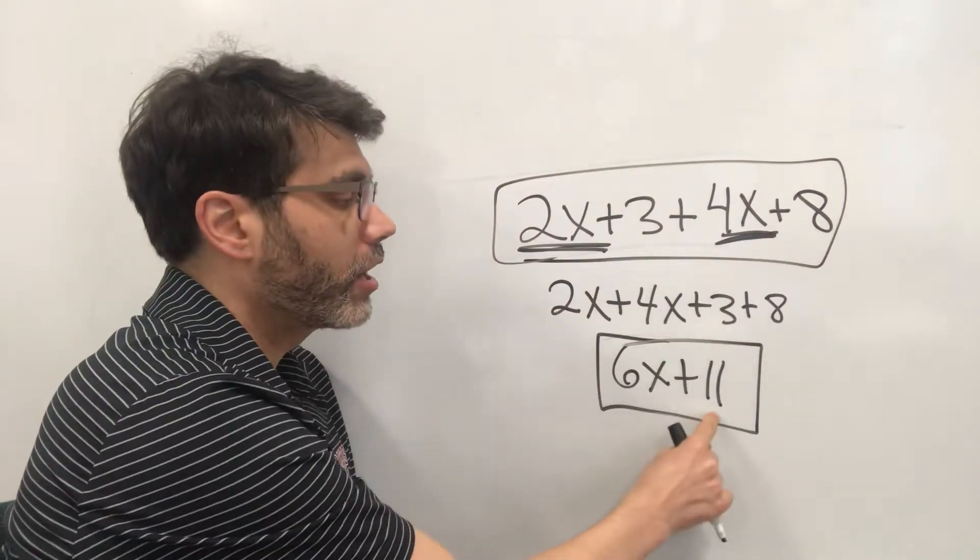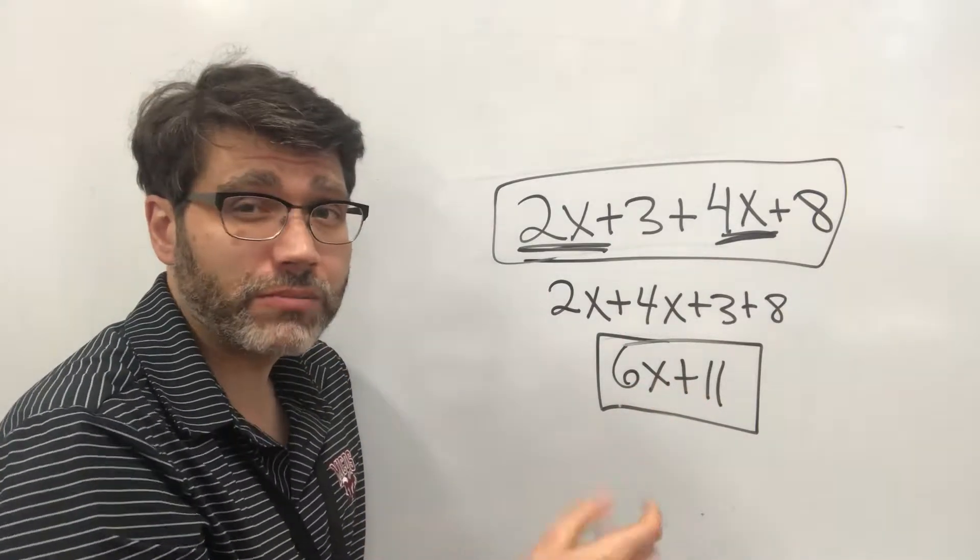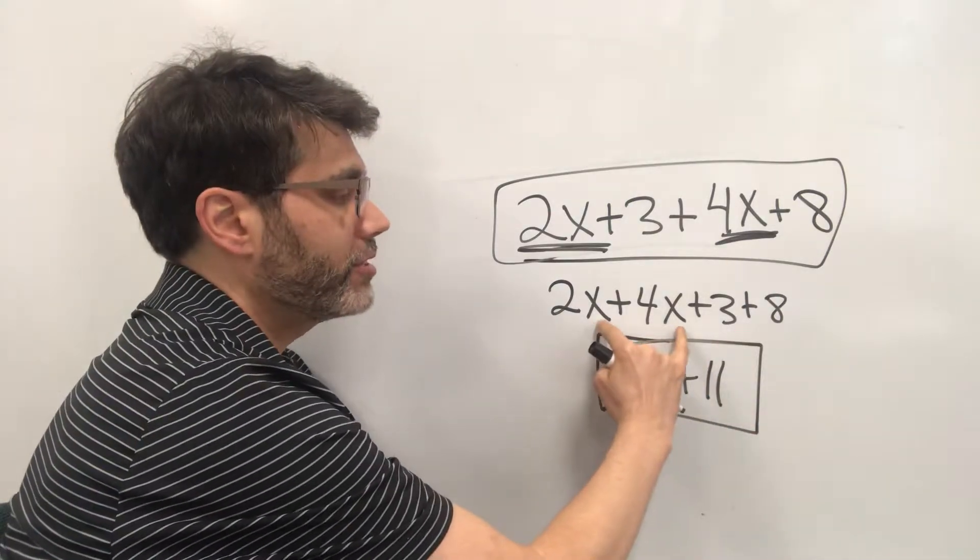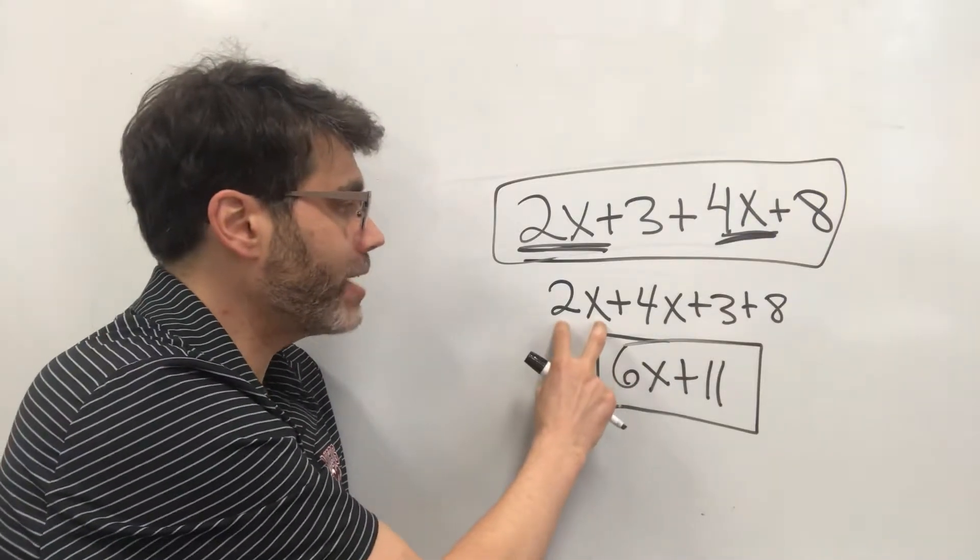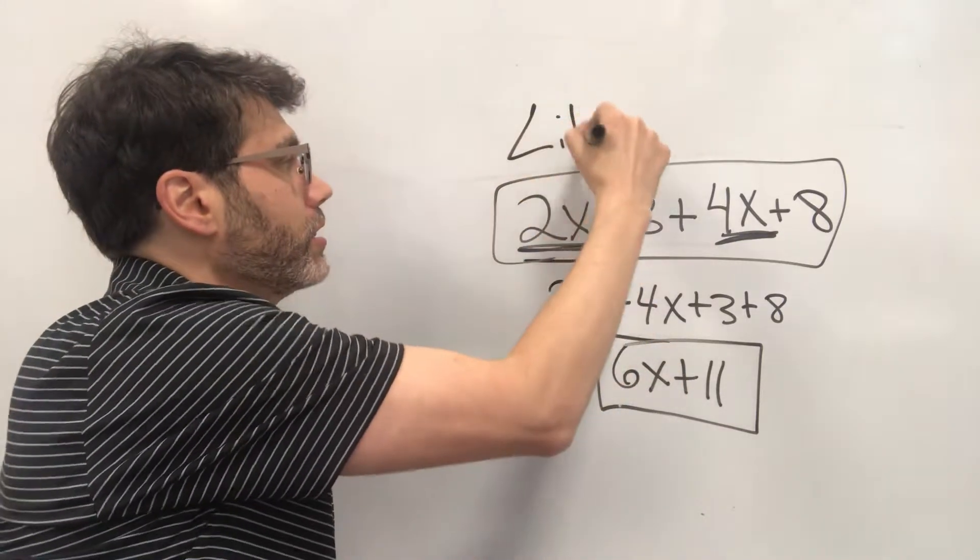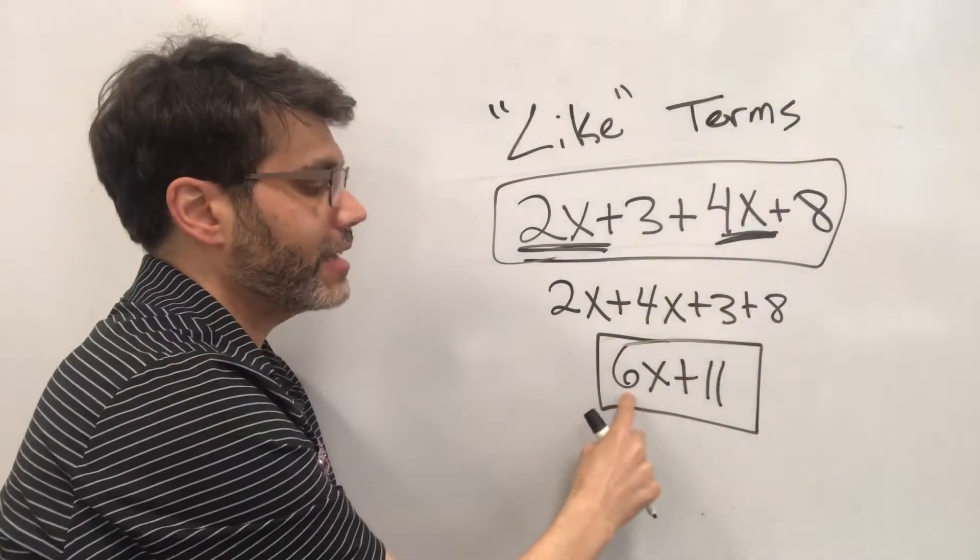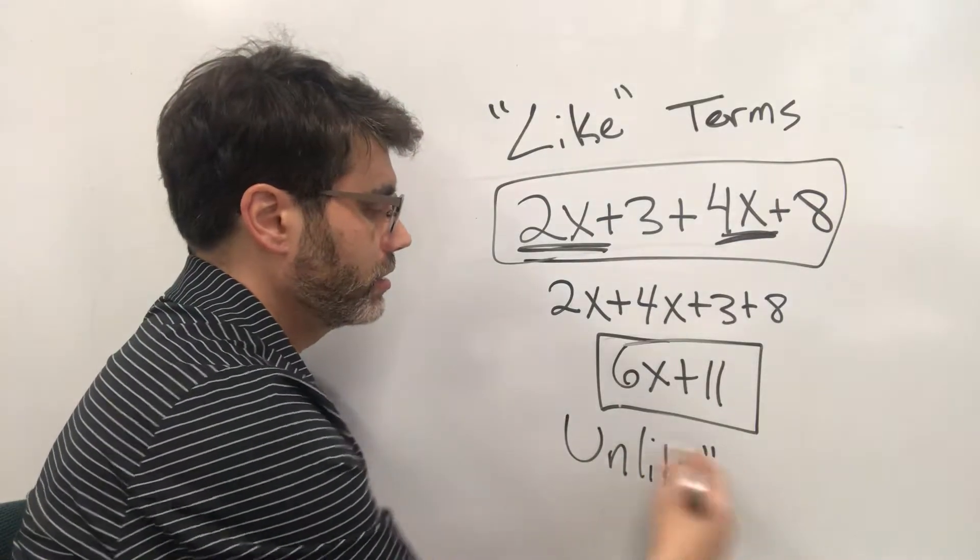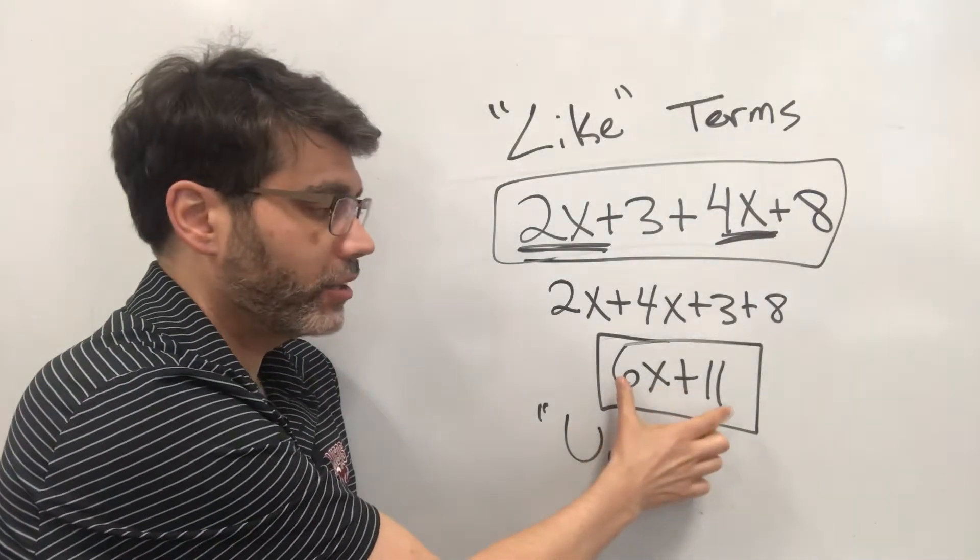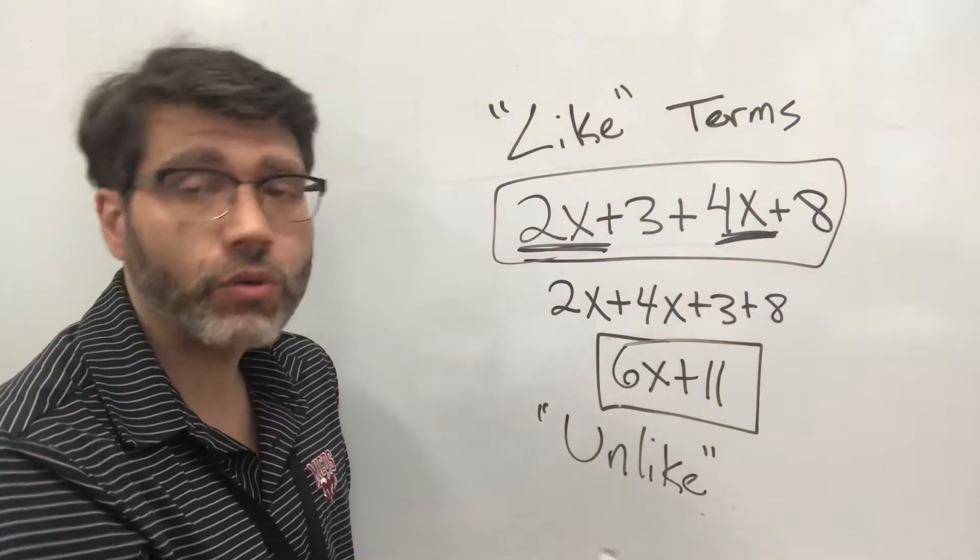These are called unlike terms. They're not like terms. If they were like terms then they would either be just numbers or they would have variables that are the same kind of variable. Okay so here 2x and 4x both have x's in common and so these are called like terms. Like terms. As opposed to 11 and 6x which are unlike terms. Okay so you cannot combine any more closely together unlike terms. Whereas if you have like terms you can indeed add or subtract them.